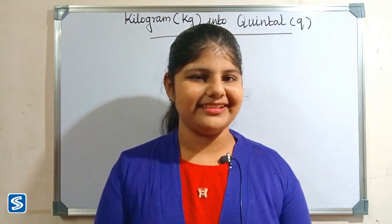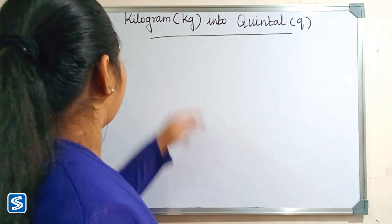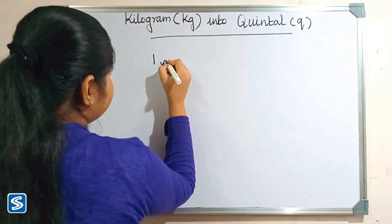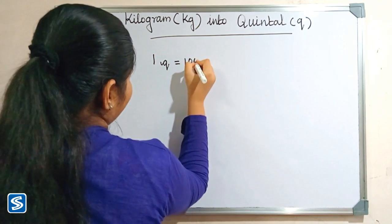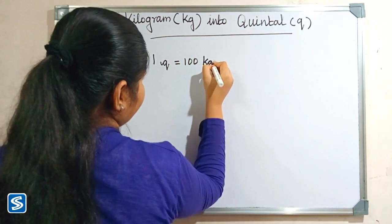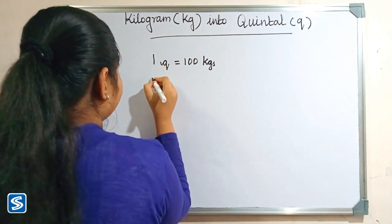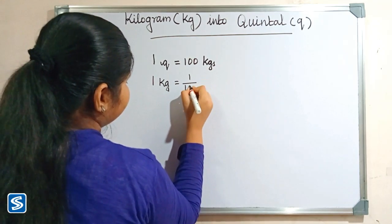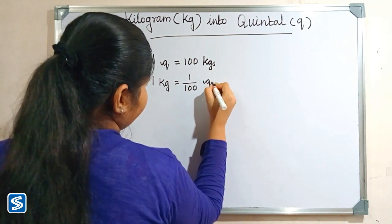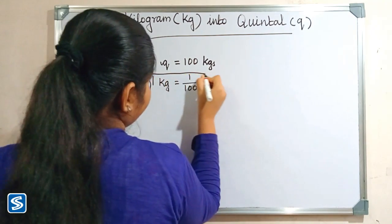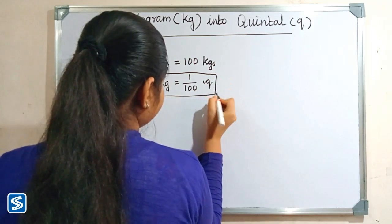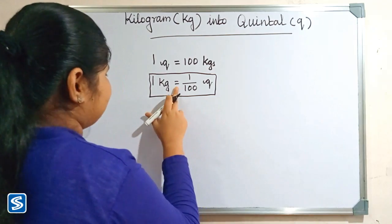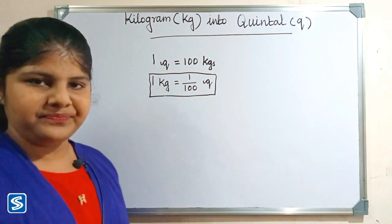Hi friends, welcome to Samish channel. In this video I am going to teach how to convert kilograms into quintals. We already know that one quintal is equal to 100 kilograms, so one kilogram is equal to one by hundred quintal. The formula for converting kilograms into quintals is: one kilogram is equal to 1/100 quintal.